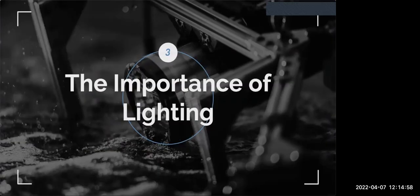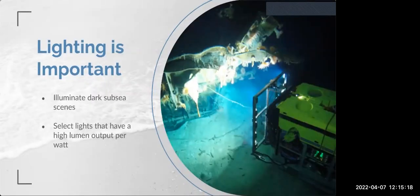The deep ocean is a low-light environment — ambient light decreases the deeper you go. To capture quality subsea videos and images, you'll need the right lighting; without it, you won't get the results you need for your marine research or offshore survey. In underwater systems, power availability matters, and lights use the most power. Select LEDs and strobes with a high lumen output per watt. More lights are not always better, and floodlights are not always better — you need the right amount of light directed where you need it.